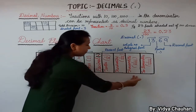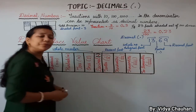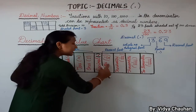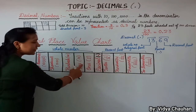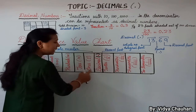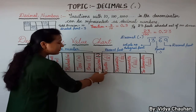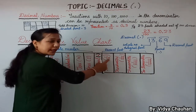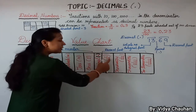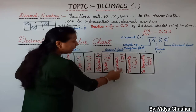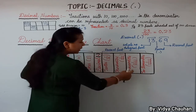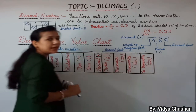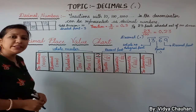Coming to the right hand side of the decimal: just after the decimal we start with the tenths place, represented by 1/10. Tens means 10, and tenths means 1/10. Similarly, hundredths is 1/100, thousandths is 1/1000, and ten-thousandths is 1/10,000. There is no ones place on the right side — we go directly to tenths.